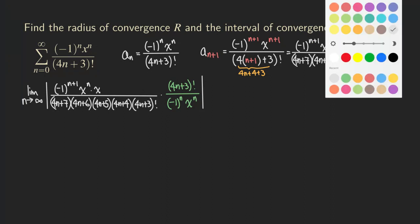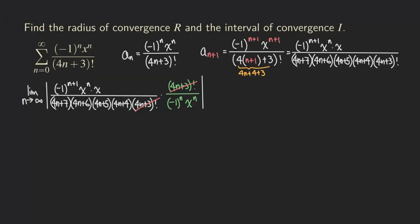Now let's do some cancelling. We can cancel the 4n plus 3 factorial, and we can also cancel x to the n. We also don't need to worry about the alternating factors — negative one to the n plus 1 or negative one to the n. So what's left in the limit is just x in the numerator, and in the denominator we have 4n plus 7, times 4n plus 6, times 4n plus 5, times 4n plus 4.